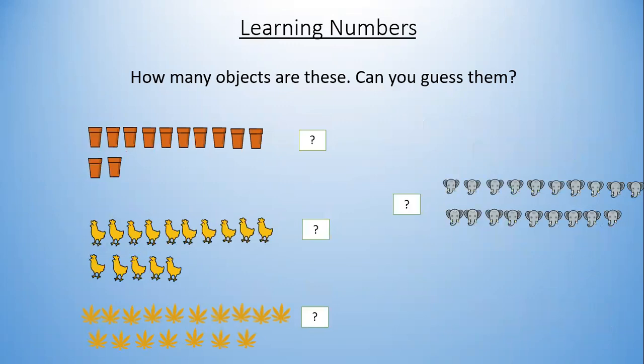How many objects are these? Can you guess them? So let's count. We'll start with pots. 1, 2, 3, 4, 5, 6, 7, 8, 9, 10, 11, 12.